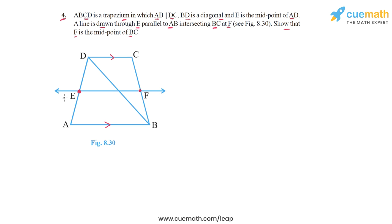We will make use of the converse of the midpoint theorem. This theorem says that from one midpoint of a triangle, if you draw a line parallel to the second side, then it bisects the third side. Let's apply the converse of the midpoint theorem to triangle DAB — I'm going to highlight this triangle for you.